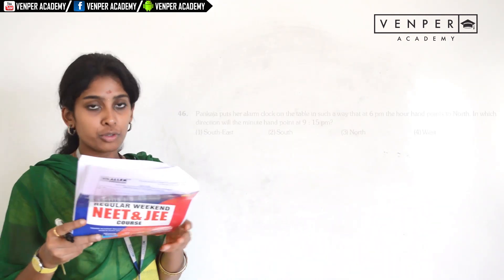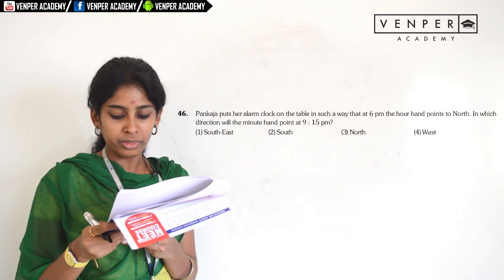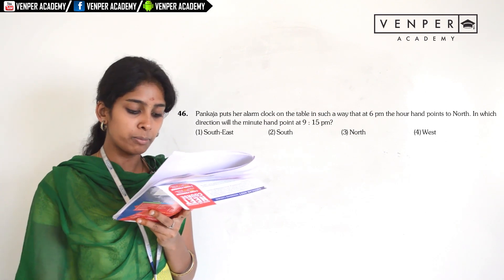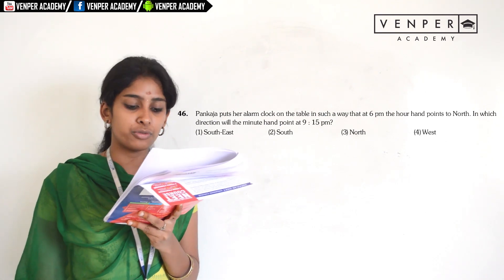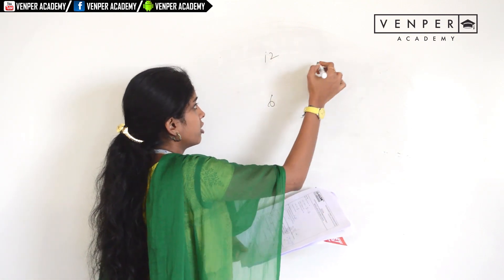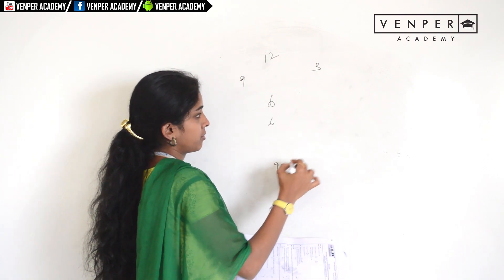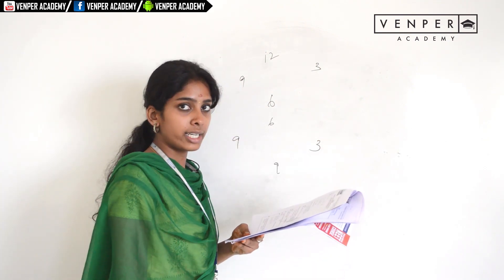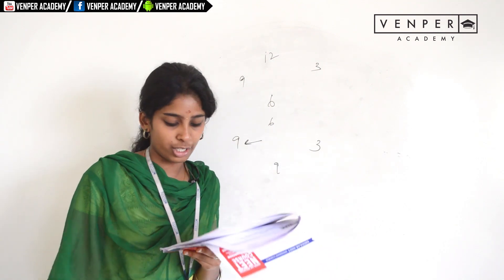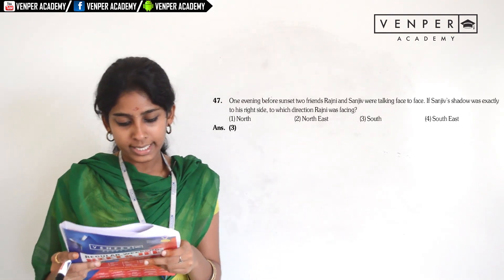Question forty-six: Pankaja puts her alarm clock on the table so that at 6 PM the hour hand points north. She has inverted the clock. At 9:15 PM, the minute hand will point towards the west direction. So the answer is the fourth option.